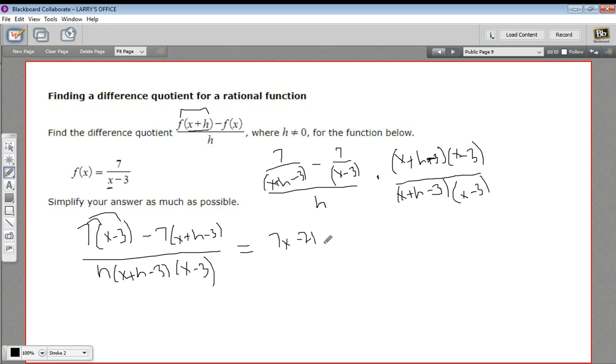And distributing this negative 7, I'd get minus 7x plus 21. And already can see that some things are going to get simpler. And on the bottom here, I have h times x plus h minus 3 times x minus 3.